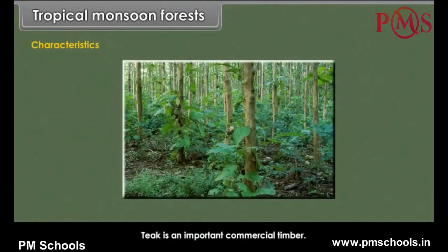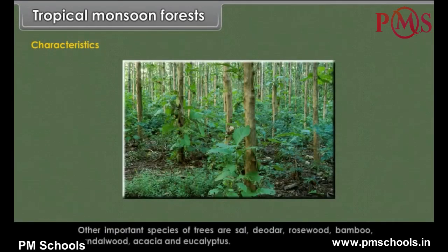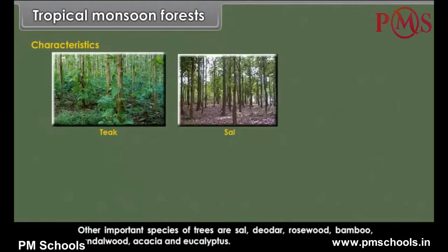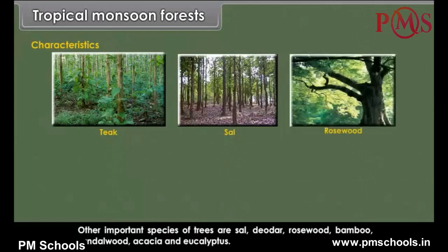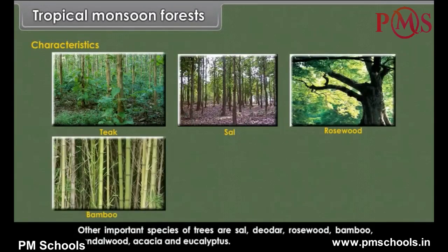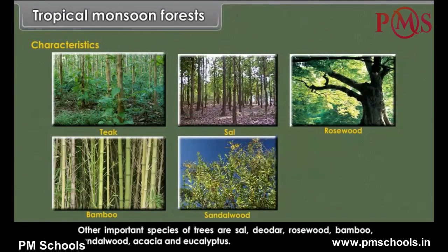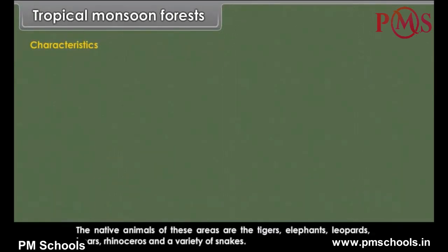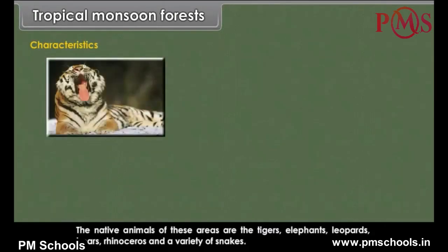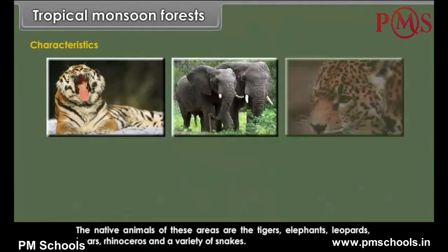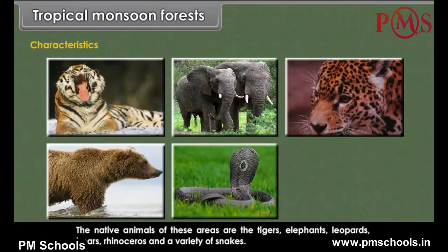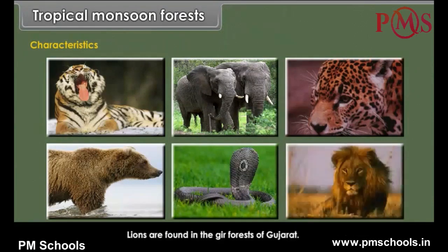Teak is an important commercial timber. Other important species of trees are Sal, deodar, rosewood, bamboo, sandalwood, acacia and eucalyptus. The native animals of these areas are tigers, elephants, leopards, bears, rhinoceros and a variety of snakes. Lions are found in the Gir forests of Gujarat.